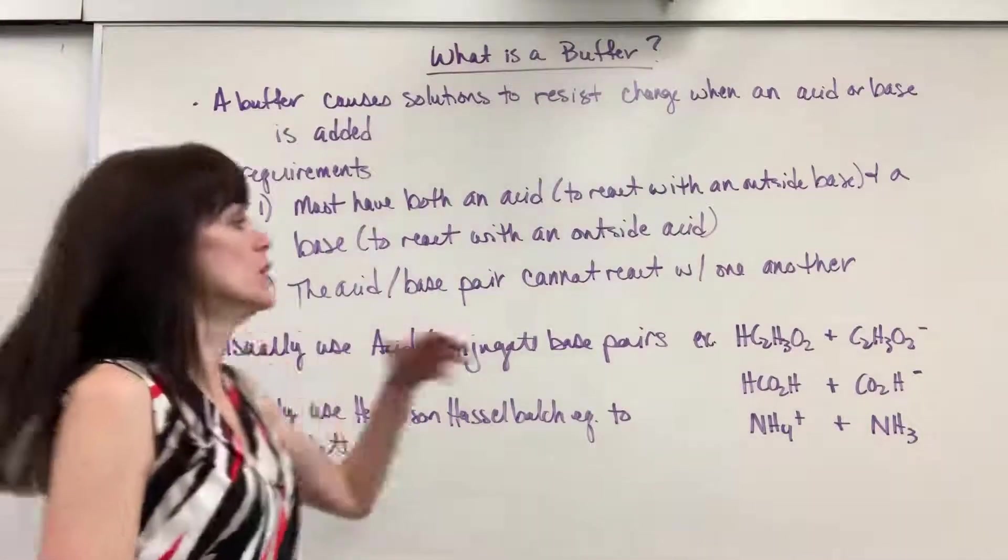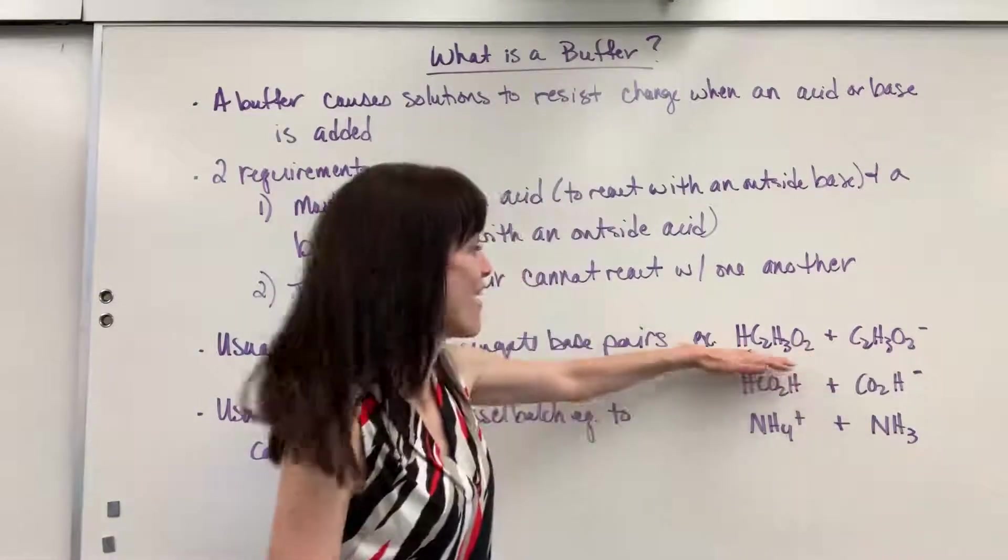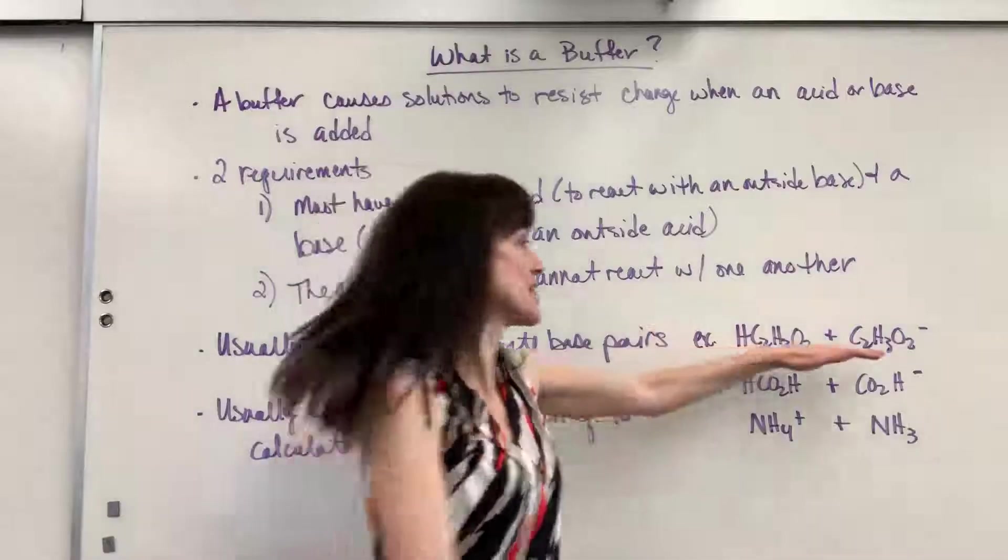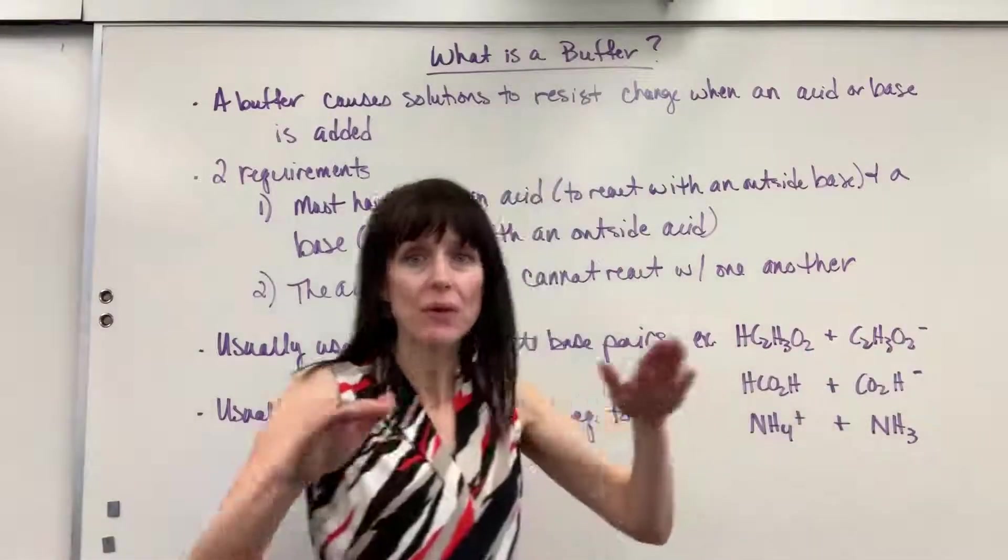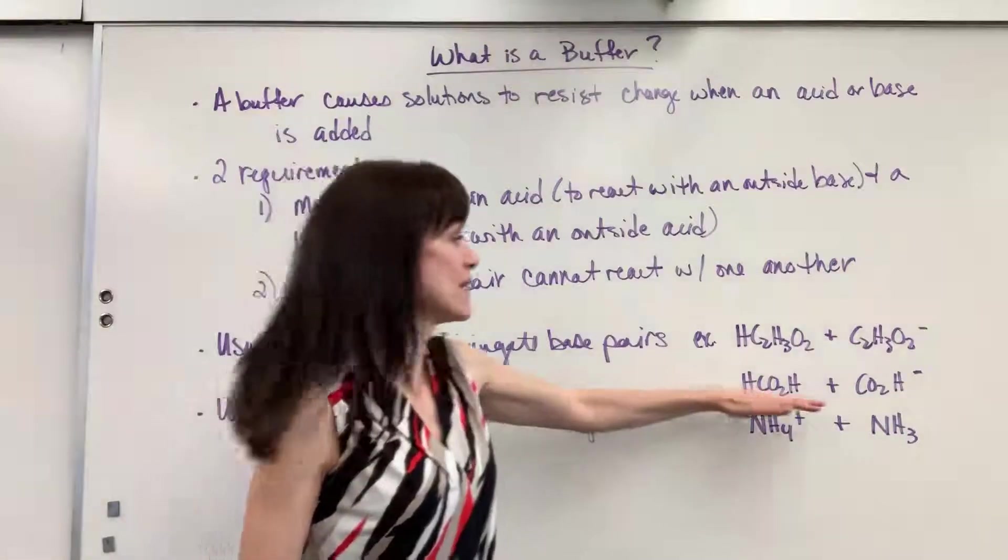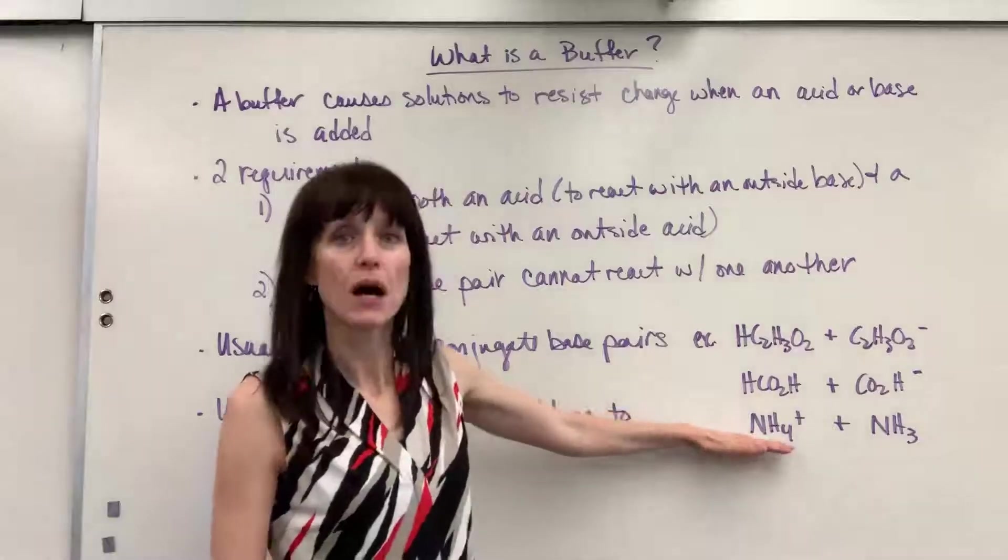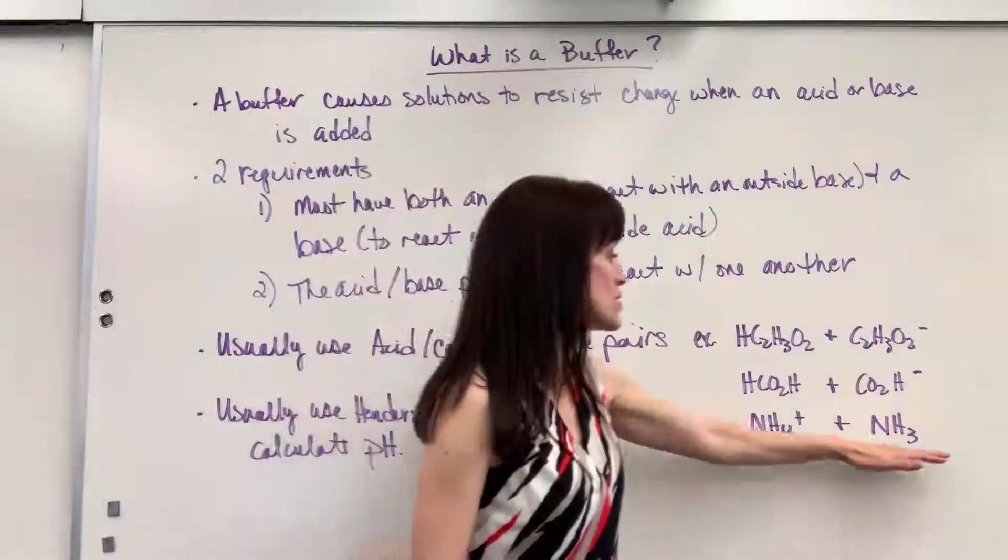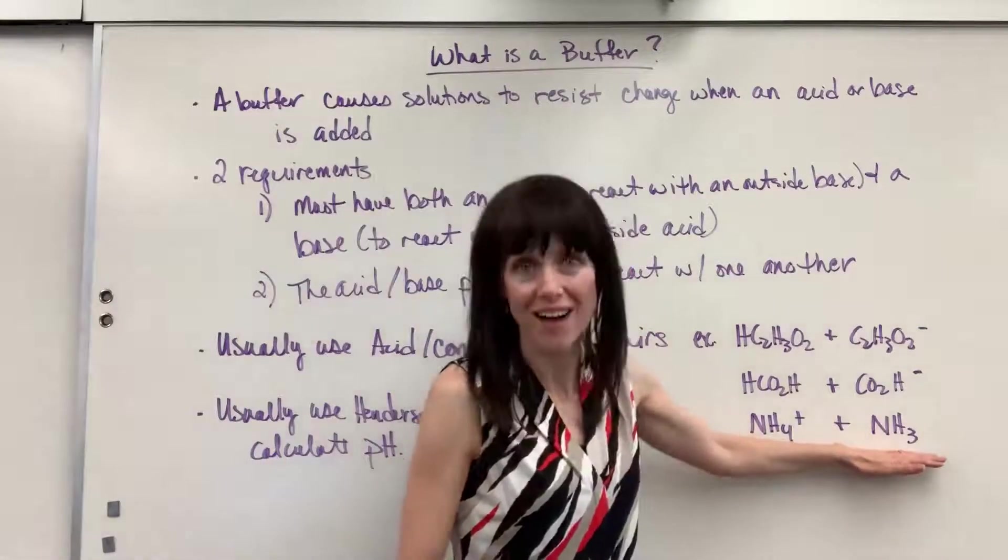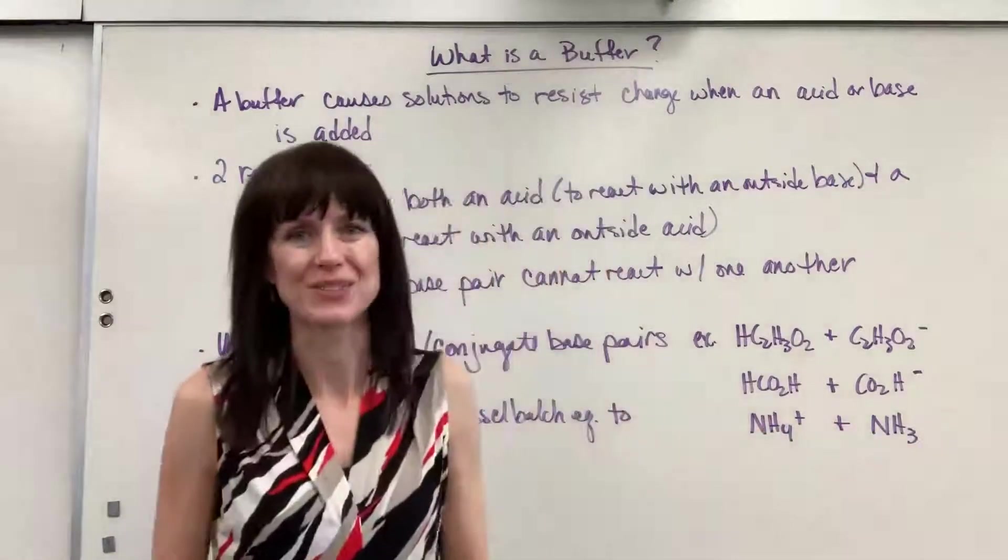So for example, a really common one is going to be acetic acid with the acetate ion. Check it out. That's the acid. This is the base and they won't react with each other. Here's another example, formic acid with a formate ion, the acid with its conjugate base. Here I have the acid ammonium, and the conjugate base is ammonia. So you have that acid conjugate base pair, they won't react with each other.